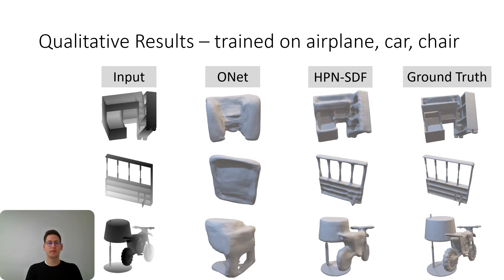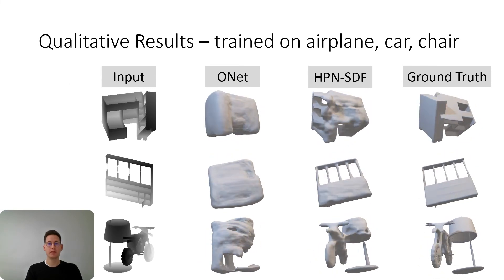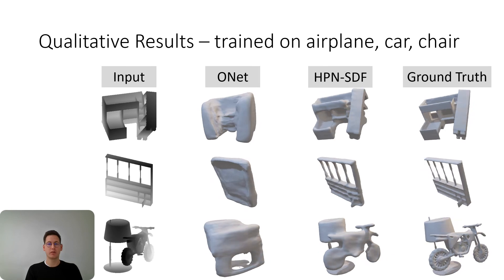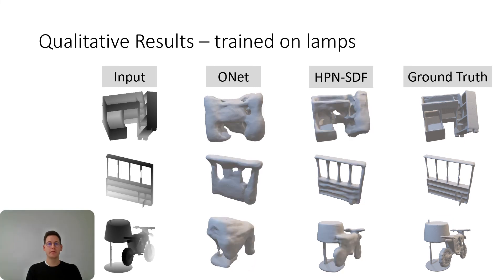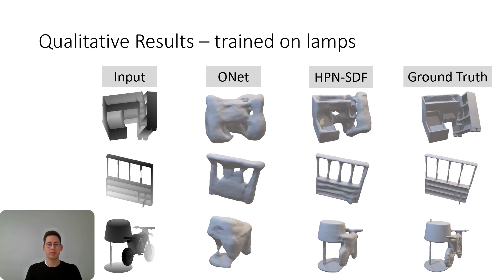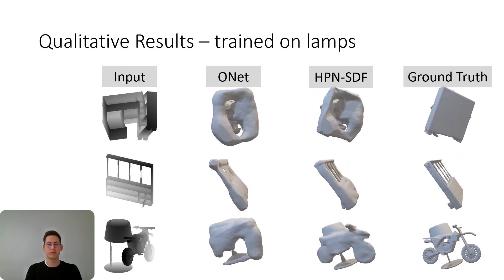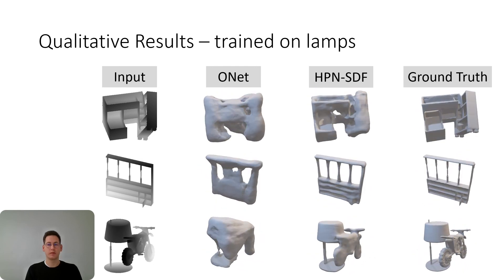Here you can see more qualitative results for a network that has been trained on airplane, car, and chair, and yet it is able to reconstruct very detailed shapes on novel classes. Here you can see reconstructions from a network trained on lamps — a training set more than six times smaller than the one from the previous slide — and yet the reconstructions are of similar quality and detailedness.